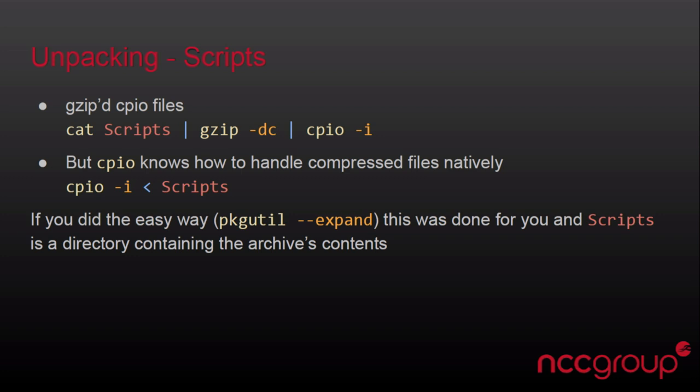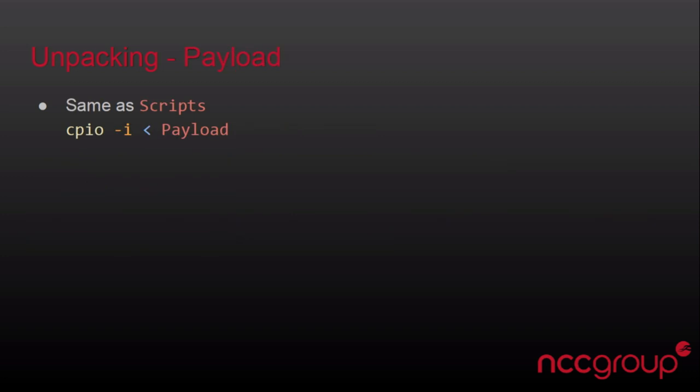If you did it the easy way to begin with, the expand command actually goes ahead and extracts this archive already, and instead of having the scripts object be an archive, it is already a directory with the contents inside of it. You do the same thing for payload. You go through the CPIO command, and sometimes going through that payload and extracting the files, it has further packages in it, so you would just recurse through if you wanted to find everything that's going to happen during your install.